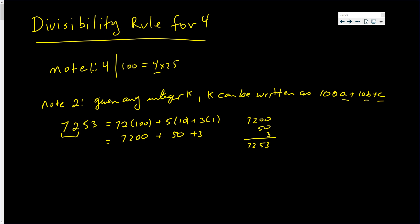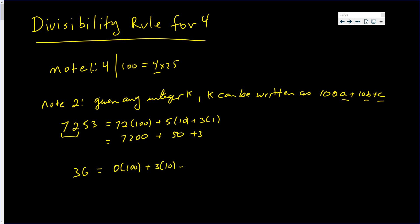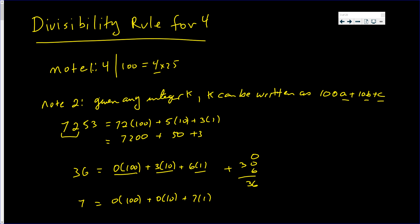What if you have a smaller number, like thirty six? That is zero times a hundred plus three times ten plus six times one — zero, plus thirty, plus six. Of course, when you add them up you get thirty six. Likewise, if you just have seven: seven is zero hundreds plus zero tens plus seven ones — zero plus zero plus seven — which of course equals seven.